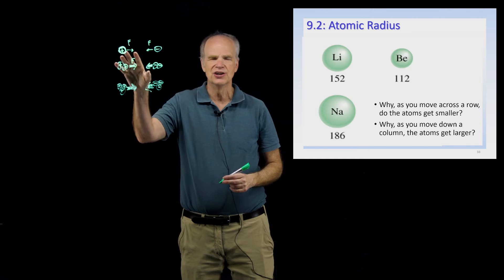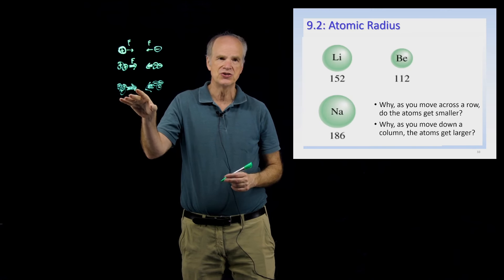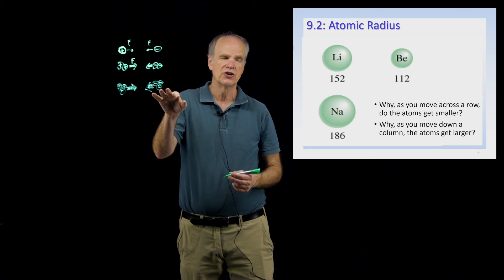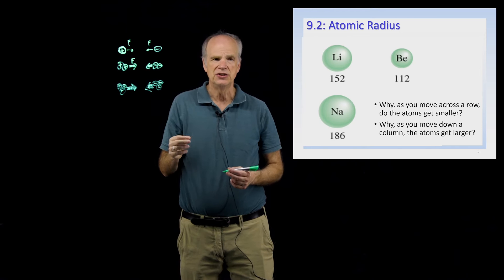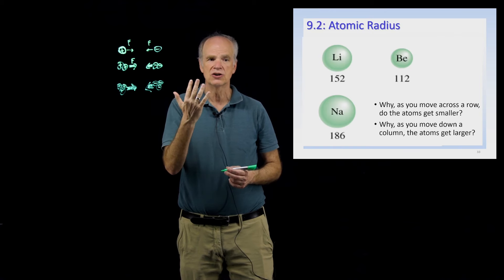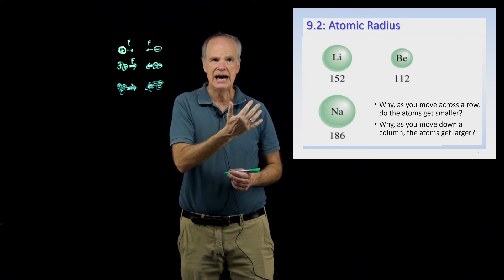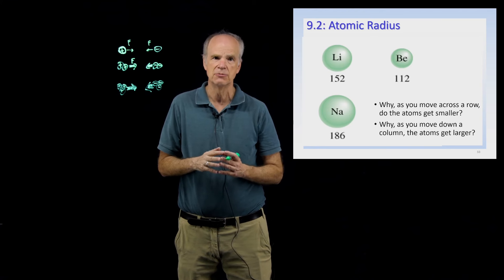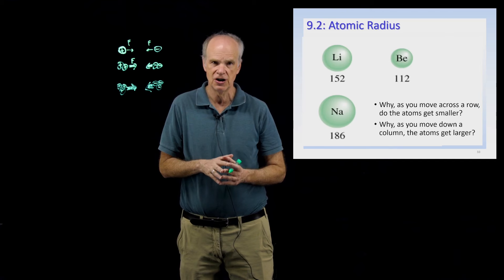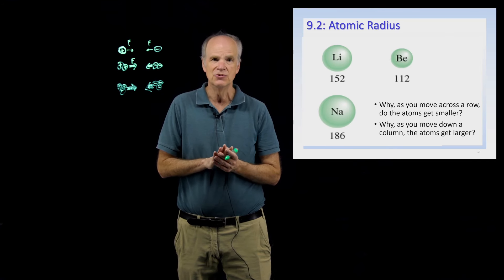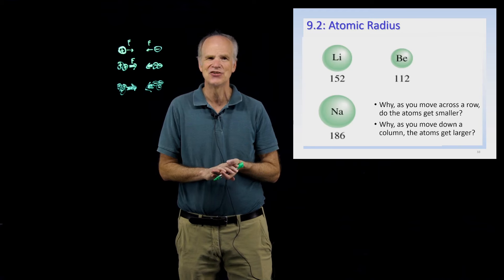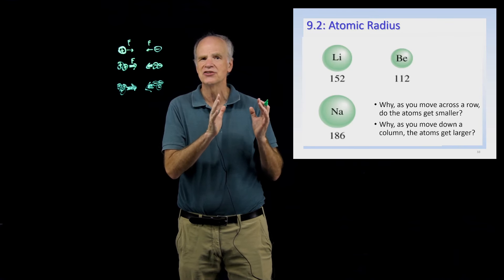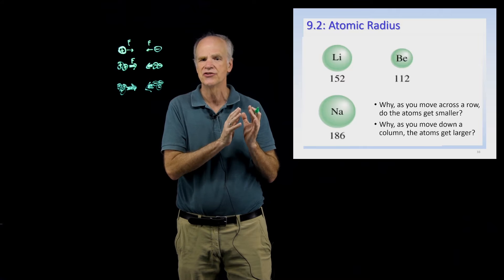With three positive charges and three negative charges, you get an even stronger force — about nine times the strength compared to a single positive and negative charge. We can apply this to atoms: the positive charges are the protons in the nucleus, while the negative charges are the electrons in the electron cloud. As you go across a row of atoms, you're increasing the atomic number — increasing the number of protons and positive charges in the nucleus — but you're also increasing the number of electrons, giving a stronger force that brings the electron clouds in.